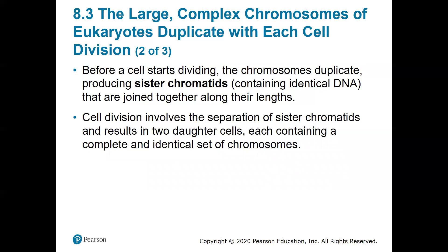Before a cell starts dividing, the chromosomes duplicate producing what they call sister chromatids, which are identical DNA copies. They are joined together along their lengths. The sister chromatids are joined by an area called the centromere. Cell division involves the separation of sister chromatids, which results in two daughter cells each containing a complete identical set of chromosomes. The goal of cell division is to create an identical copy — you want that cell to be able to do the same job.